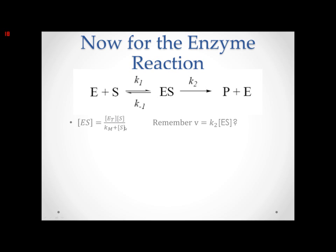Now let's go back to the beginning. Remember that the velocity of the formation of product equals K2 times [ES], because ES is the precursor, K2 is the rate constant, and that's how fast it's forming P. We now have [ES] solved for. Substituting that value in, the velocity at a certain point in time equals K2 times ET times S over Km plus S.